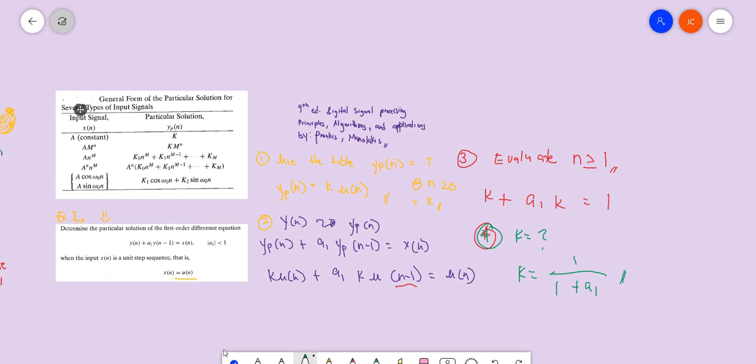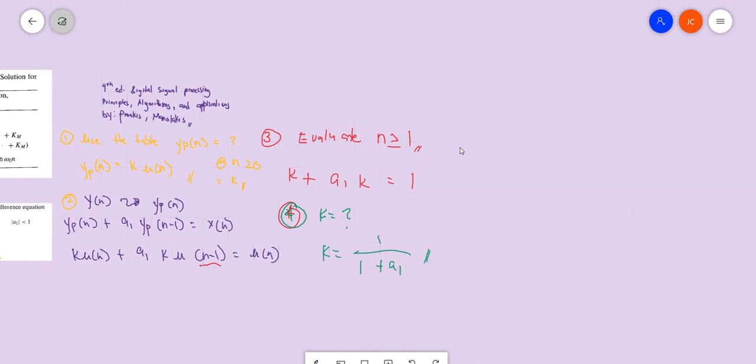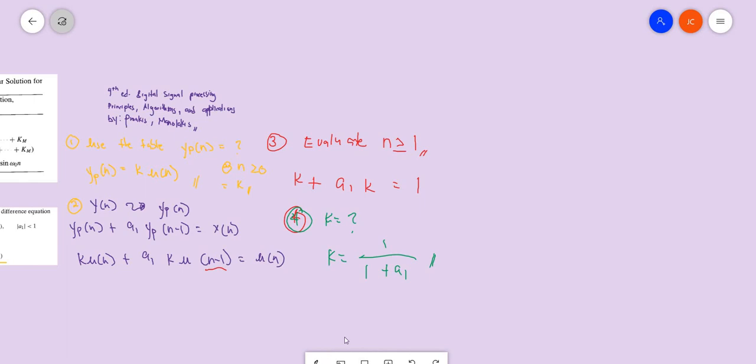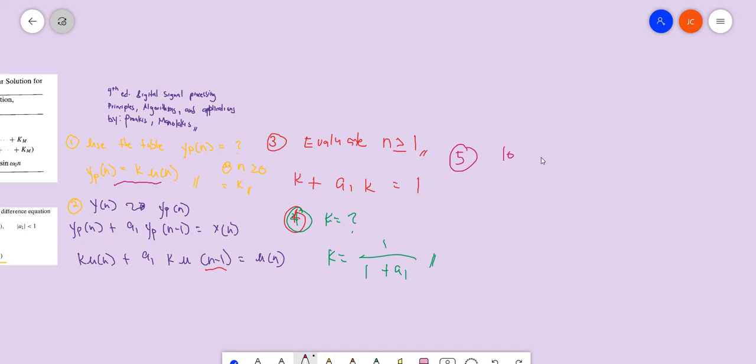What is our number five? The number five or step five would be - guess what - the last step. Number five would be: substitute the value of k into our particular solution, this one. Look at step one and then substitute. Therefore our particular solution now would be: